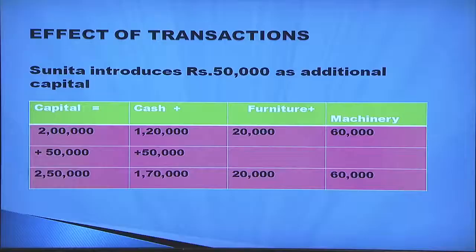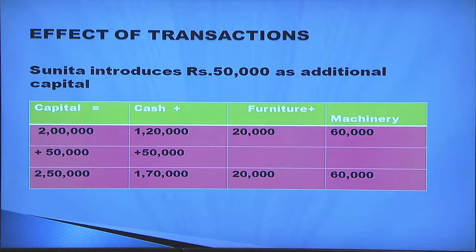Furniture is increasing to rupees 20,000 and machinery to rupees 60,000. Next, Sunita introduces rupees 50,000 as additional capital. The earlier equation is two lakh equals one lakh 20,000 cash plus 20,000 furniture plus 60,000 machinery. When she introduces 50,000 as additional capital, cash increases by 50,000 and capital also increases by 50,000. The new accounting equation is two lakh 50,000 equals cash one lakh 70,000, furniture 20,000, and machinery 60,000.